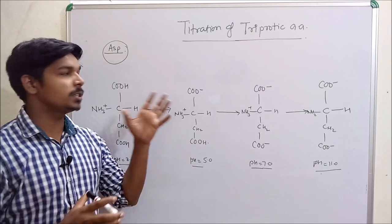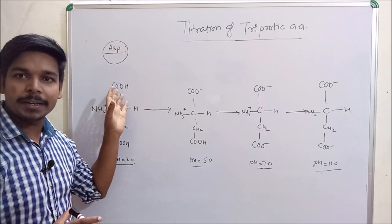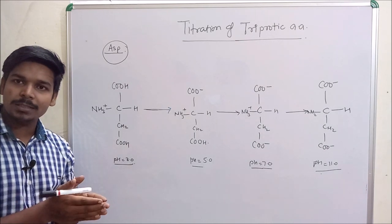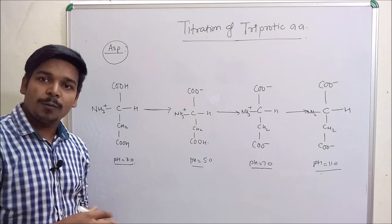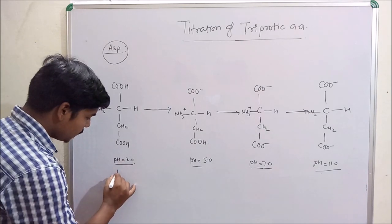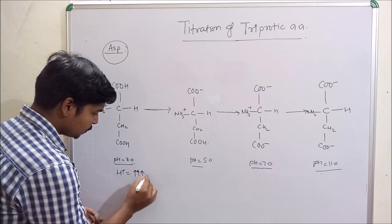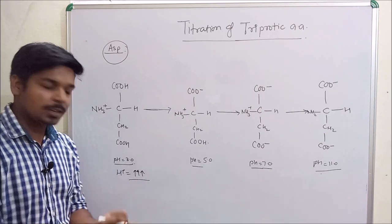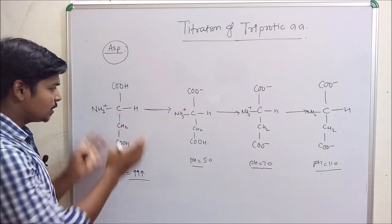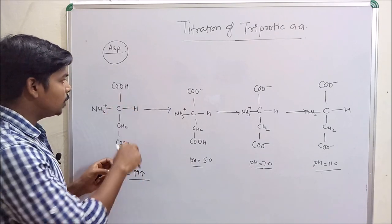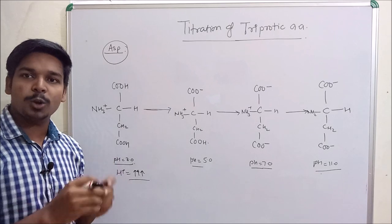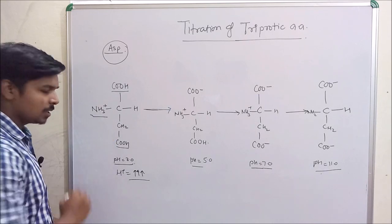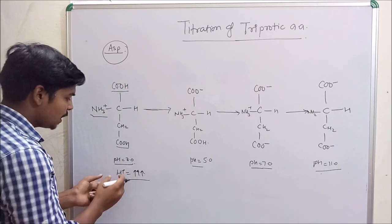For the triprotic amino acid titration, let's see the first case of aspartate. This is the structure of aspartate. When the initial pH is 3, a very low pH, the concentration of H+ is very high. When the concentration of H+ is very high, there is an abundance of protons and all the groups of the amino acid are occupied with hydrogen — COOH, COOH, and NH3+. The only charge at this pH is from the amino group: +1.